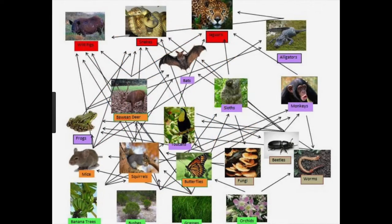Here is another food web, where we see many producer-consumer relationships. It's important to have many producer-consumer relationships because it keeps the ecosystem balanced. In this food web, we see the orchid is a producer for butterflies and worms, while grass is also consumed by butterflies. Primary consumers have many options, and so do secondary and tertiary consumers.